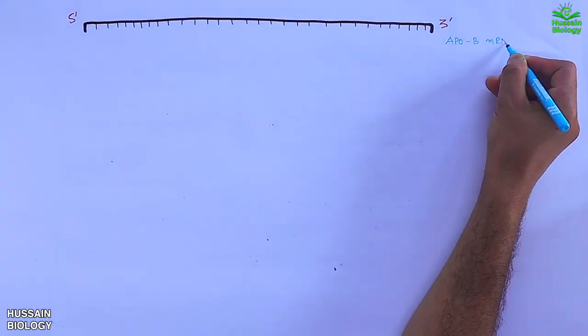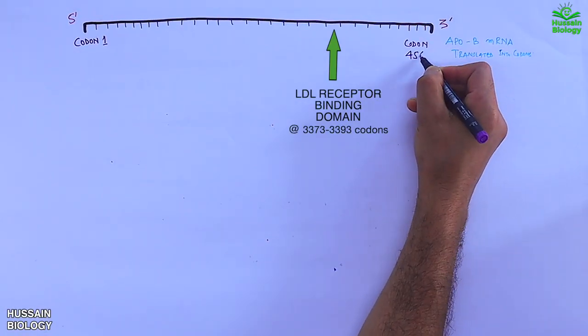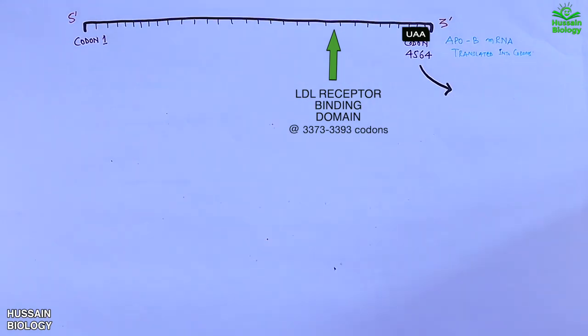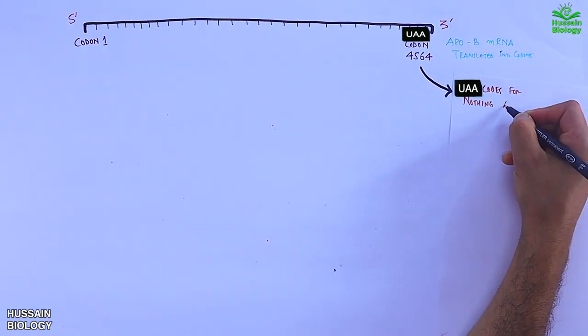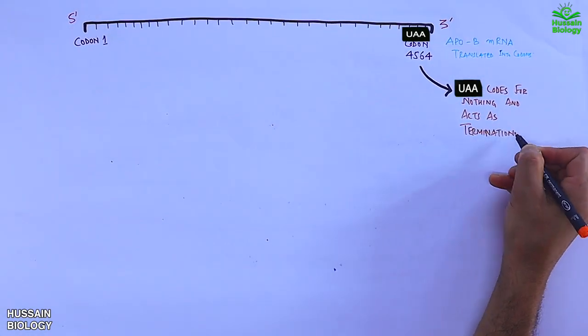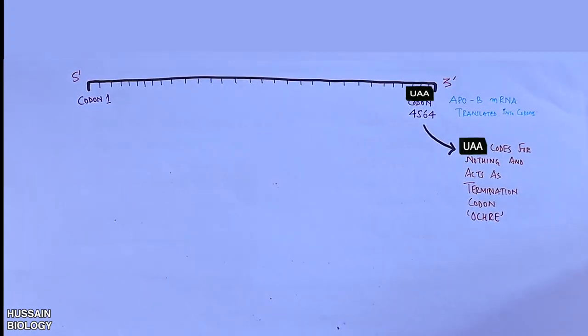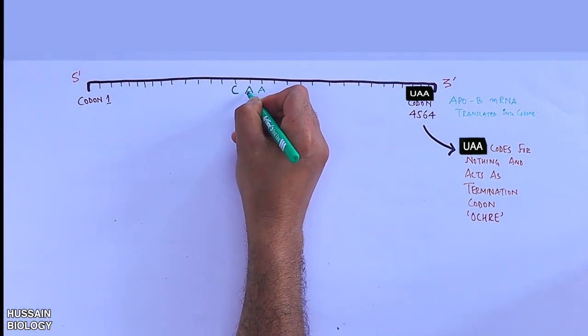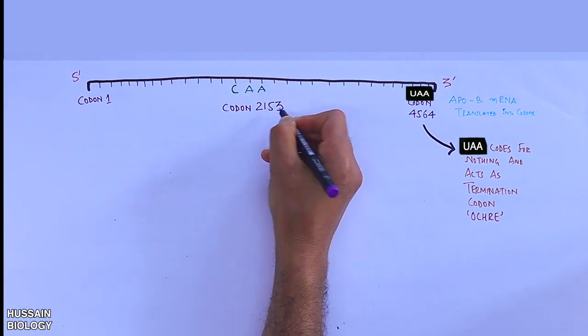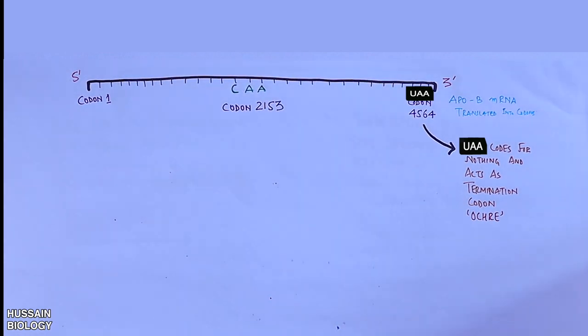Here in this diagram we have the apoB gene with 4564 codons. The last codon is UAA which codes for nothing and acts as a termination codon referred as ochre. And in the middle of mRNA we have the CAA codon at 2153 position. This CAA codon codes for glutamine amino acid.